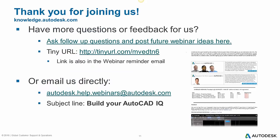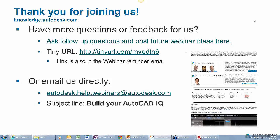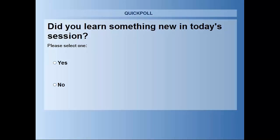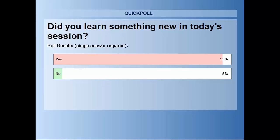We want to thank everybody for joining today. Looks like the vast majority have learned something new. Hopefully you can give this cloud rendering a try — you get some free cloud credits, so you can give it a test without it really costing you anything. If you need more cloud credits, you can purchase them. The cost is approximately a dollar per cloud credit. My recommendation is to do quick iterations at draft or standard setting at a lower resolution, and then use your cloud credits on that final render when you're absolutely sure it's the final image you're sending to a client.